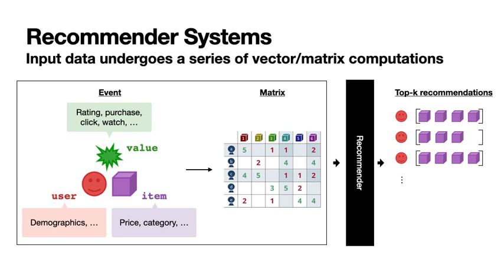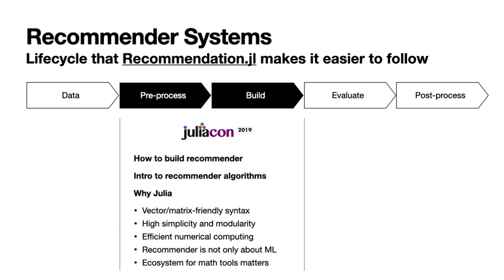The majority of recommender system computations rely on vector and matrix calculations, so the Julia programming language and recommender systems are a natural combination — that's the key point. I presented a similar topic at JuliaCon 2019, where I spoke mainly about how to build recommender systems, an introduction to basic recommendation algorithms, and why Julia can be a deeply satisfying way to build recommenders.